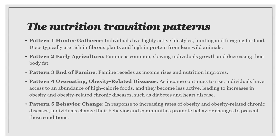Returning to the nutrition transition: researchers have divided it into five patterns. Pattern one is the hunter and gatherer. Pattern two is early agriculture. Pattern three is the end of famine. Pattern four is overeating and obesity-related diseases. Pattern five involves behavior changes.